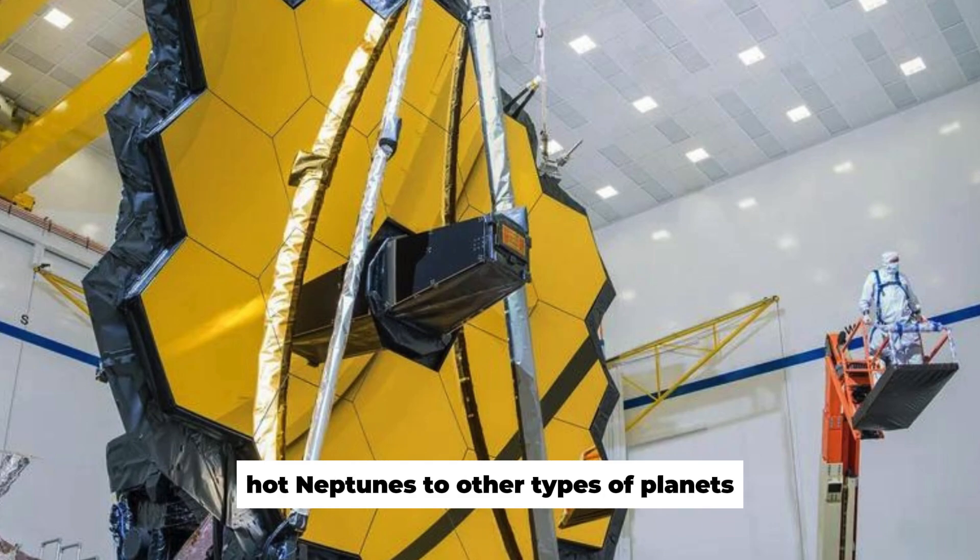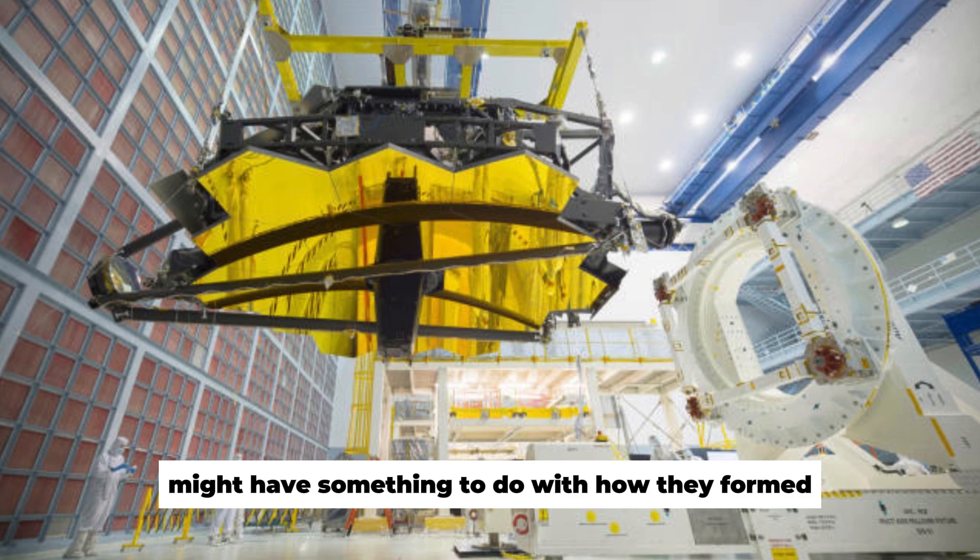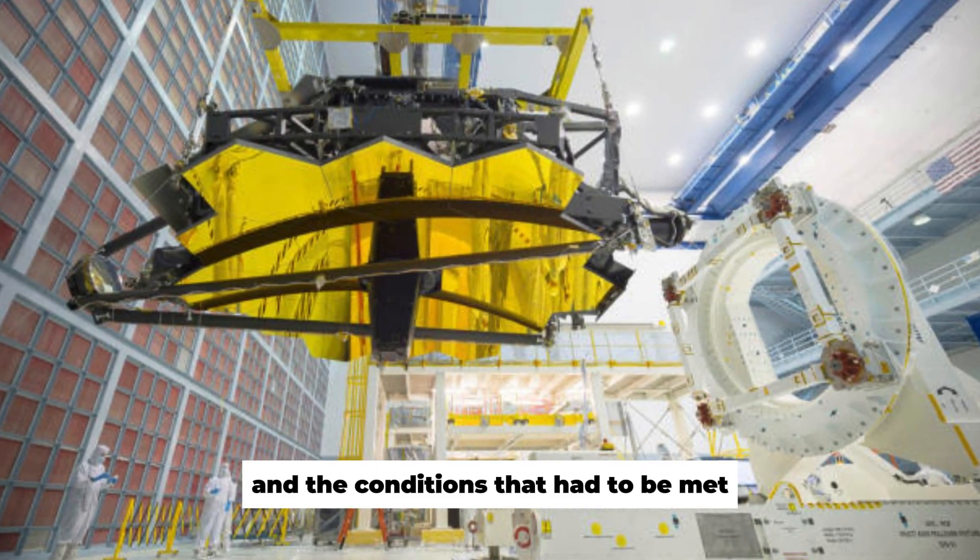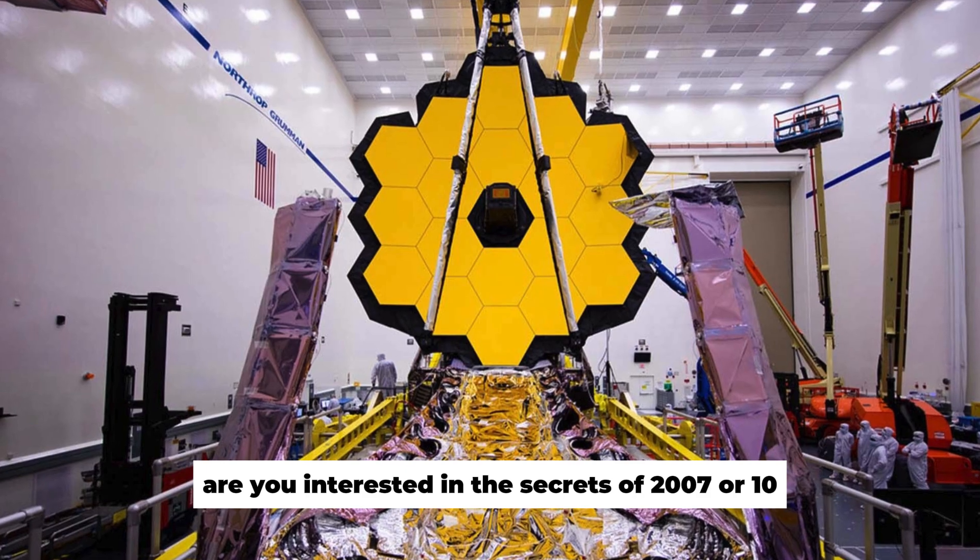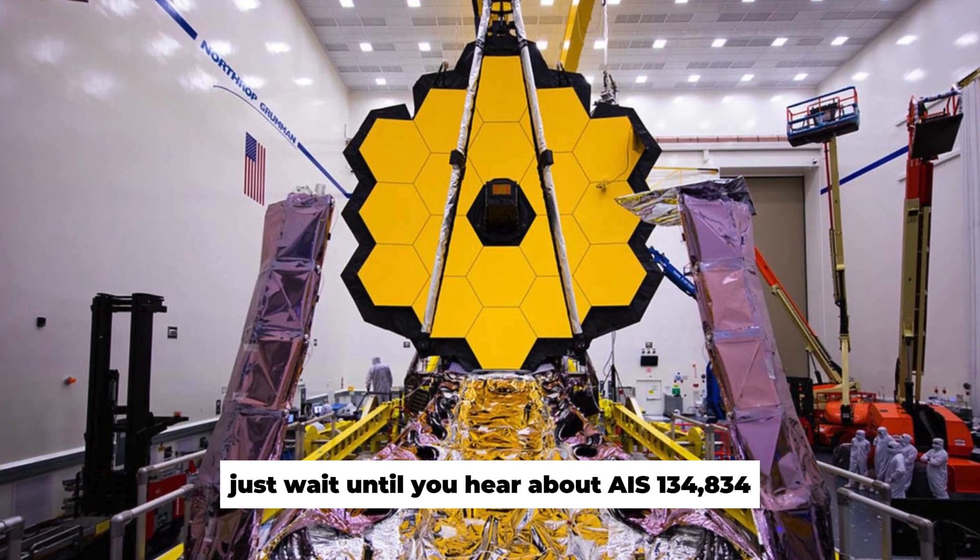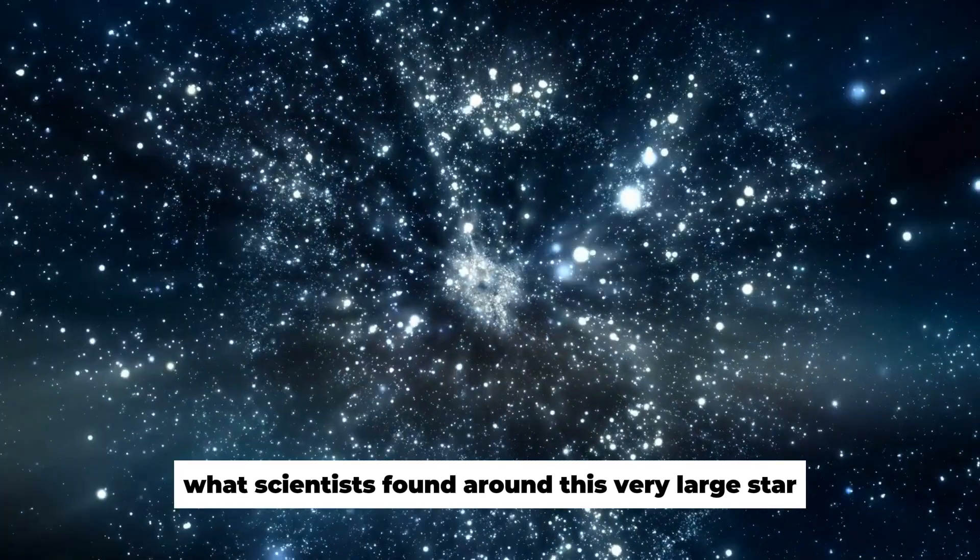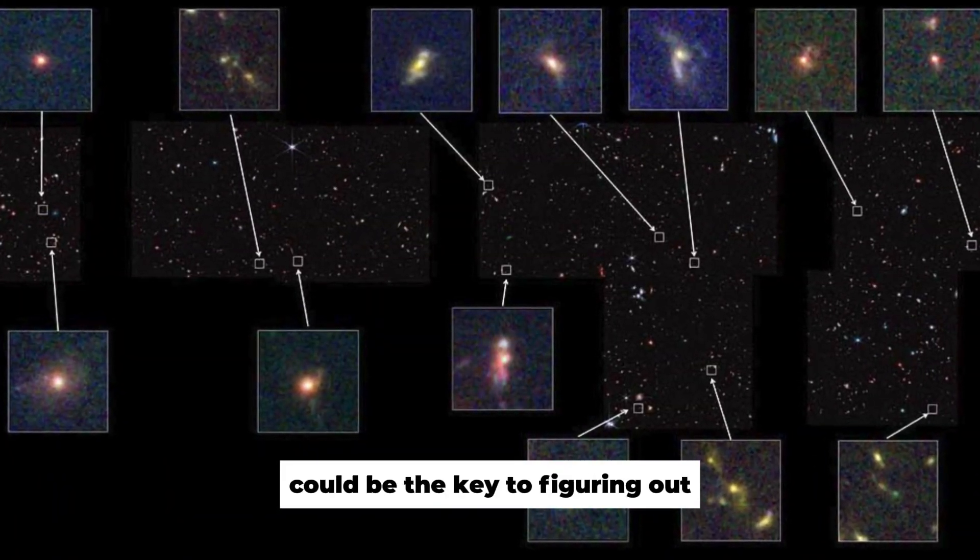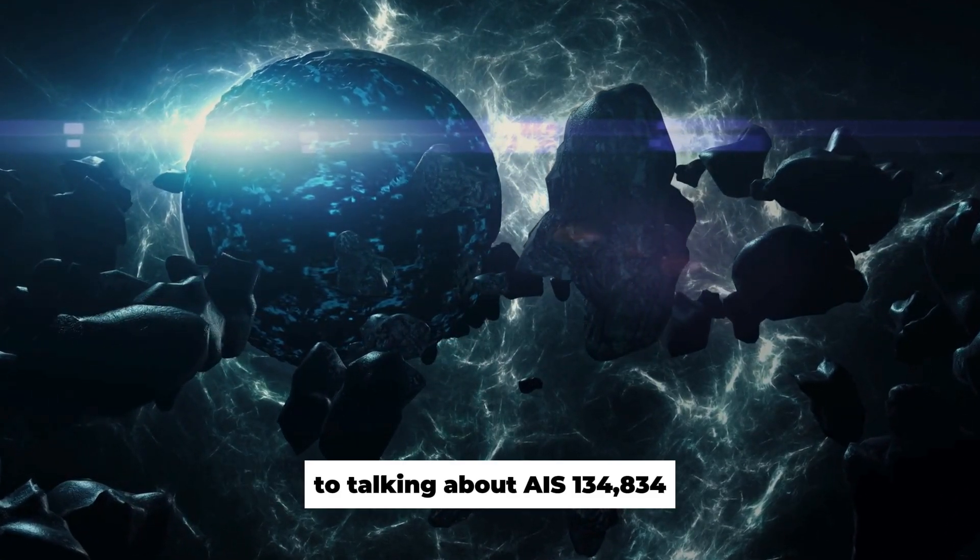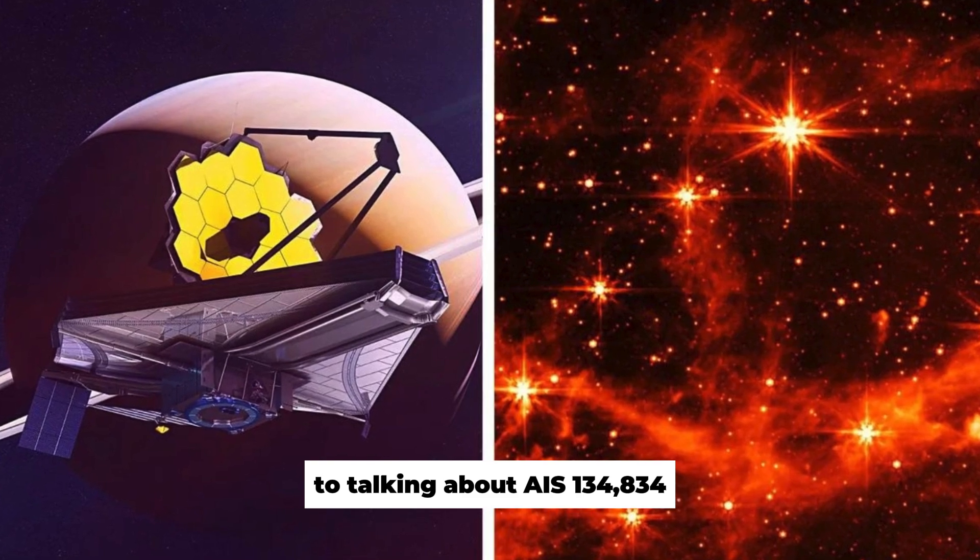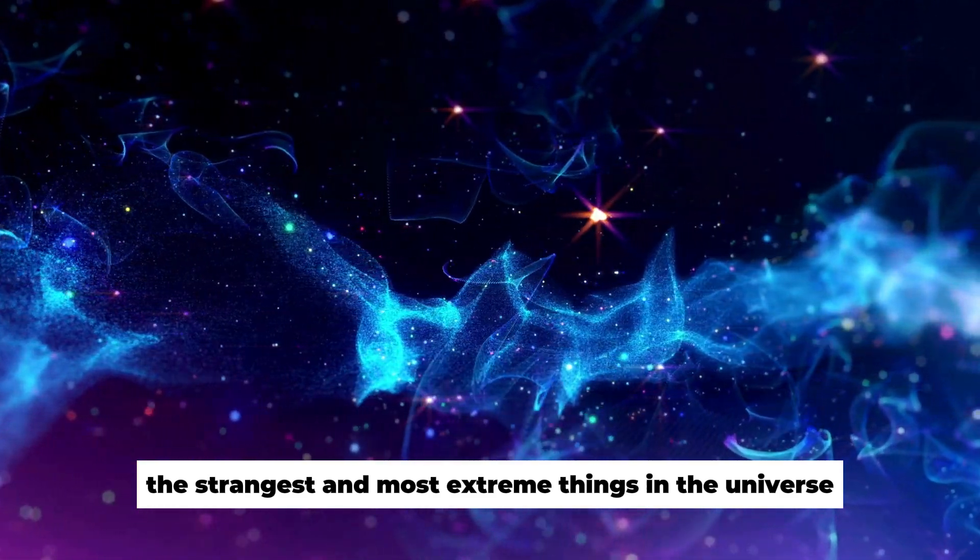If you compare ultra-hot Neptunes to other types of planets, what do you think the reasons are? Their scarcity might have something to do with how they formed and the conditions that had to be met to make such harsh settings. Are you interested in the secrets of 2007 OR10? Just wait until you hear about IRAS 13481-6124. What scientists found around this very large star could be the key to figuring out how celestial giants form. This change from talking about very hot Neptunes to talking about IRAS 13481-6124 suggests that we will continue to look into the strangest and most extreme things in the universe.